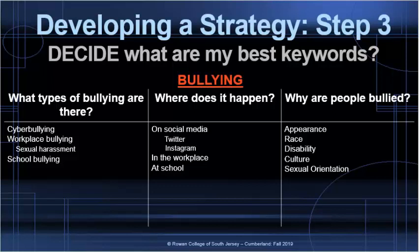Now let's think about some of the reasons why people are bullied. Bullying could be based on body type, disability, race or ethnicity, religion or faith, gender or sexual orientation, among others.